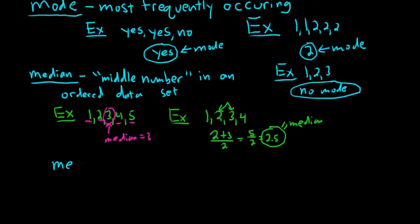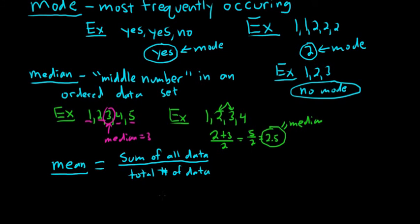Then you have what's called the mean. This is what people in the world typically call the average. So the mean is the sum of all data. So you add up all your numbers. And then you divide by the total number of data. So if you add up all your numbers and you divide by the total number, that's the mean. So if you had 4 tests and you wanted your test average or your test mean, you would add up your test grades and you would divide by 4.